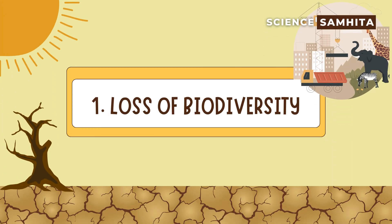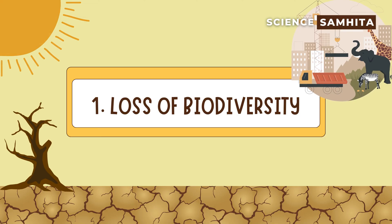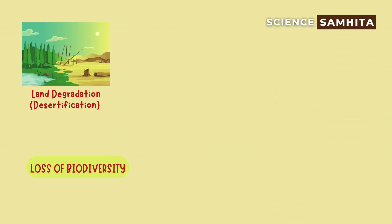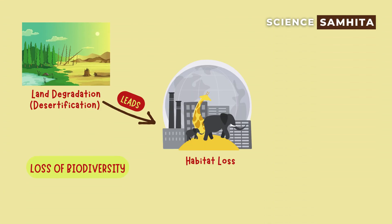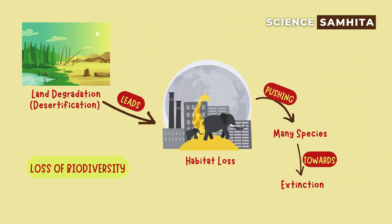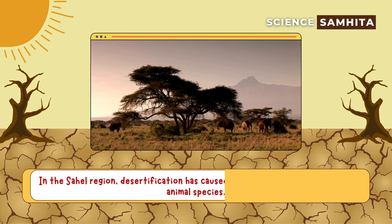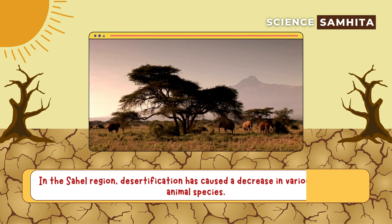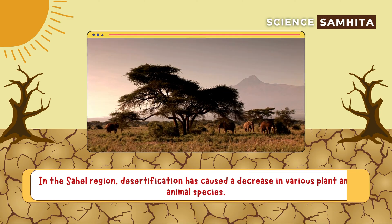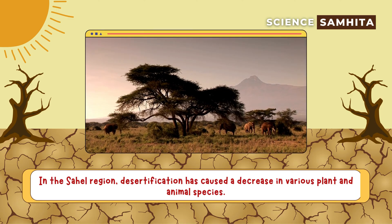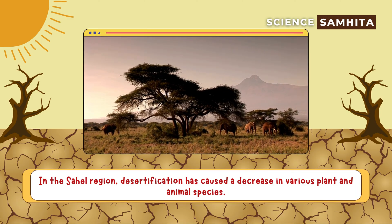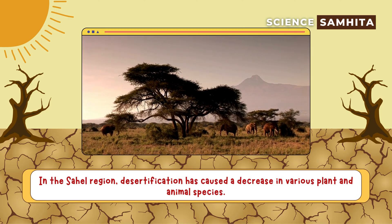The effects of desertification are far-reaching. First, loss of biodiversity. Land degradation leads to habitat loss, pushing many species towards extinction. For example, in the Sahel region, desertification has caused a decrease in various plant and animal species.